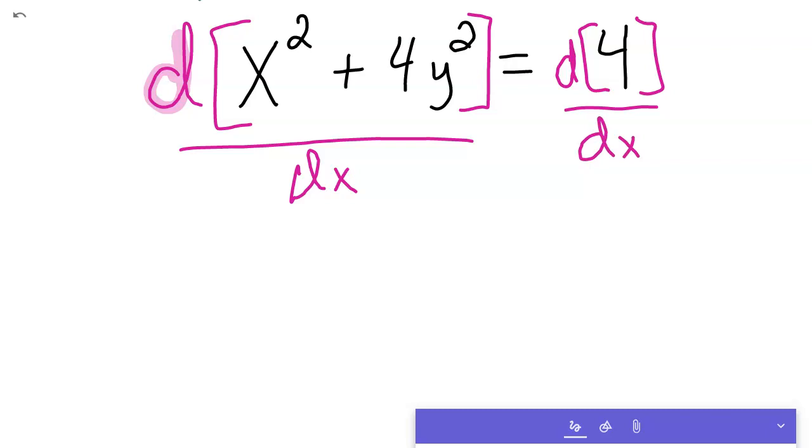What's really nice is the derivative of a constant with respect to x is zero. So that right side is zero. I'll switch colors so we kind of have some contrast going on. And then I can, since this is addition, I can just go ahead and derivate both separately.